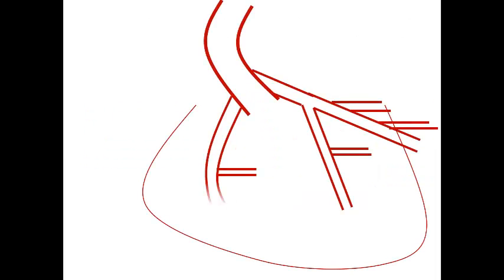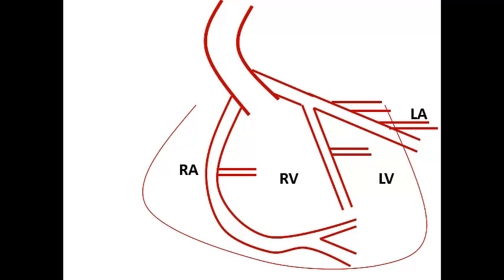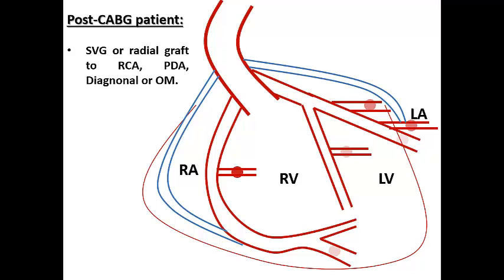Looking at this diagram for coronary anatomy, we can see the left main bifurcating into LAD and LCX, and we can see the right coronary artery. Sometimes occlusions in vessels supplying the posterior or lateral wall are not frankly apparent on ECG — for example, the PDA of the RCA, the OM branches, the LCX proper, the diagonal branch, the RV branch, or in post-CABG patients, the saphenous venous graft or radial graft to the RCA, LAD to diagonal, or to the OM — so the graft itself may be the culprit vessel.